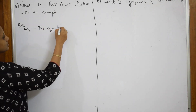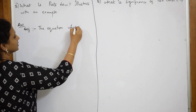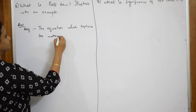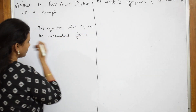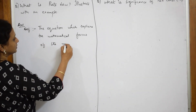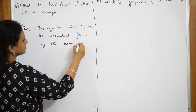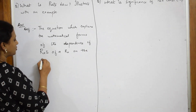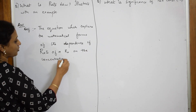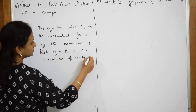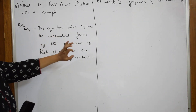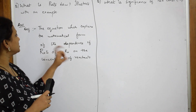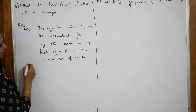The rate law is the equation which explains the mathematical form of the dependence of the rate of a reaction on the concentration of the reactants. I will take an example and explain.